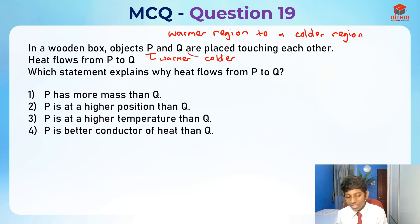Which statement best explains this? P has more mass than Q - this is irrelevant. P is at a higher position than Q - this is also irrelevant. P is at a higher temperature than Q - this is right. P is a better conductor than Q - this is wrong because if P is a better conductor, they are in the same place and it does not affect anything.